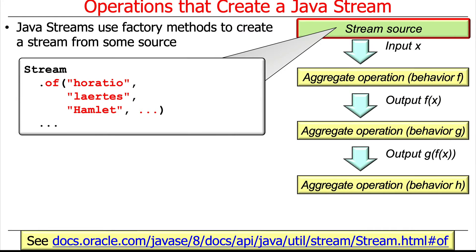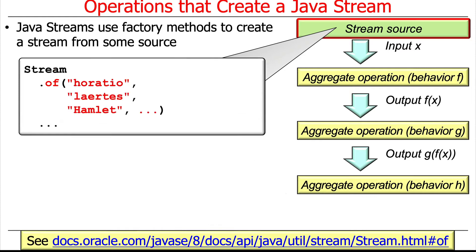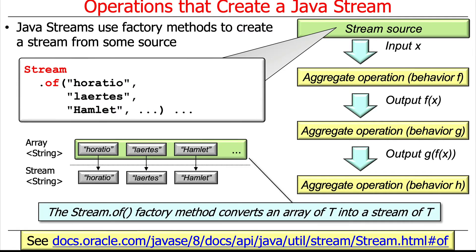Here's an example. You've seen this before: Stream.of(). Of is typically a factory method in modern Java. In this case, we give it an array of strings and it makes us a stream. We start out with an array of strings, then we call the of() method, and that turns it into a stream of strings. That's basically what the of() factory method does — it takes an array of type T and converts it into a stream of type T.